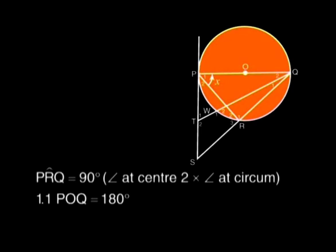With all that in your head, you are now ready to look at the questions. Angle PRQ is the angle at the circumference, with the straight angle POQ at the center subtended by the same arc. So that means that angle PRQ is 90 degrees, half of 180 degrees.